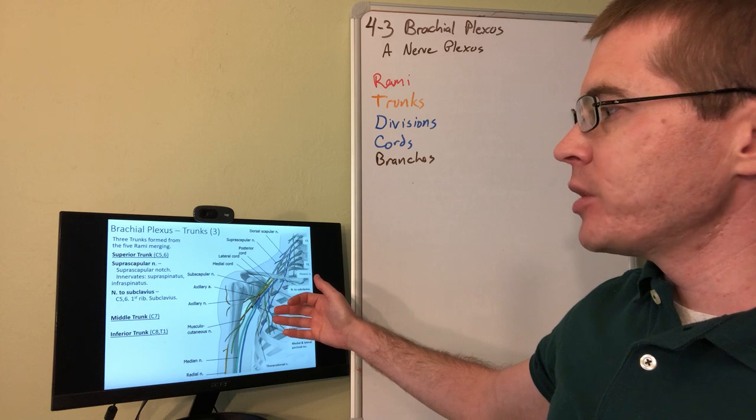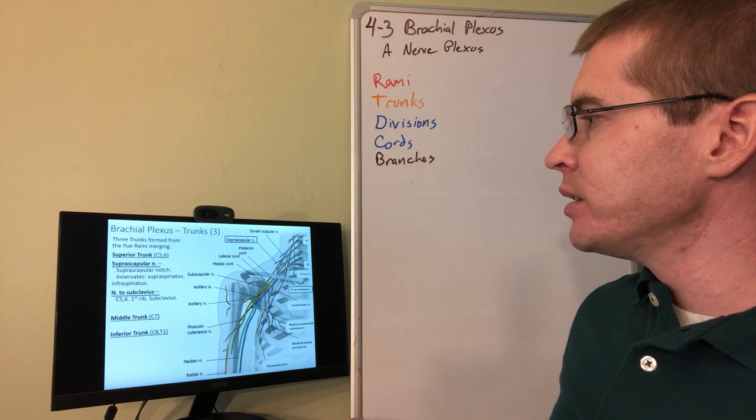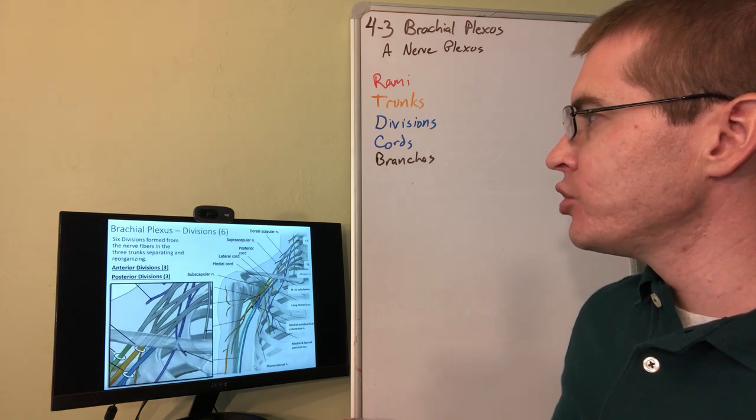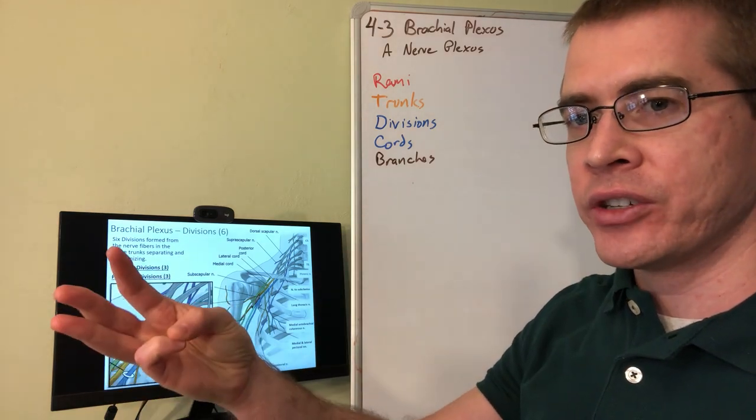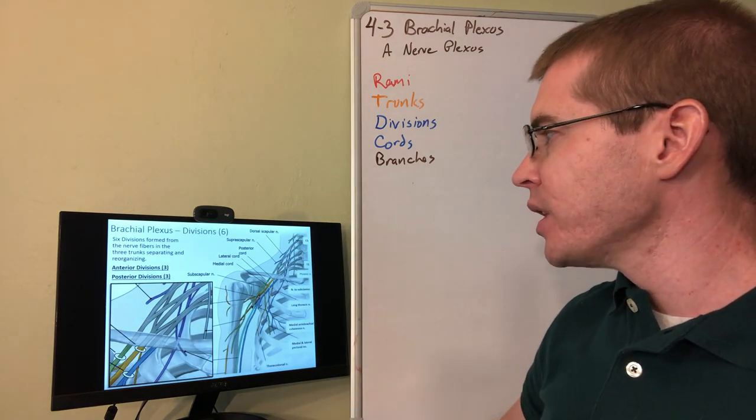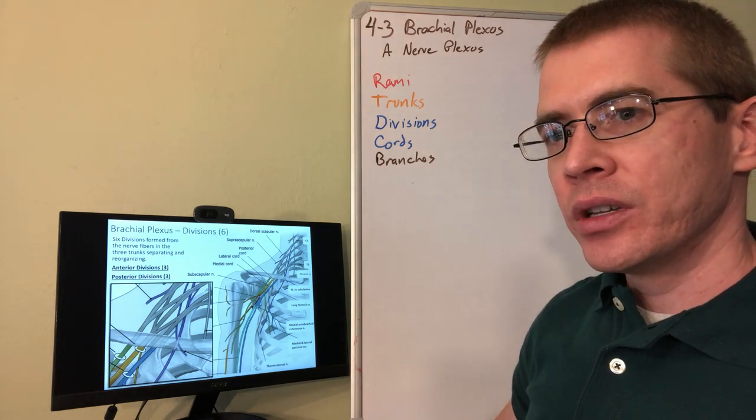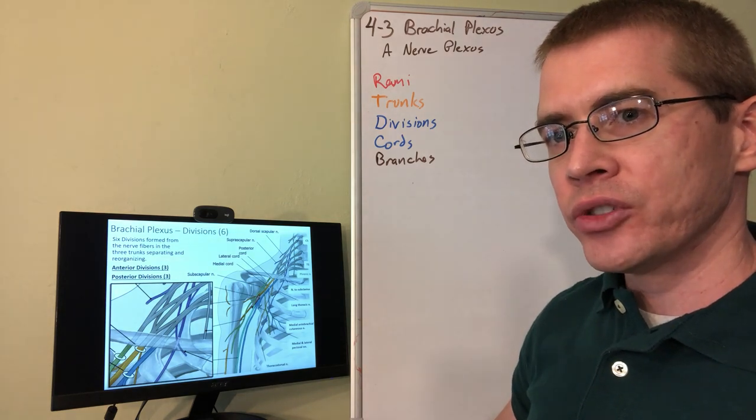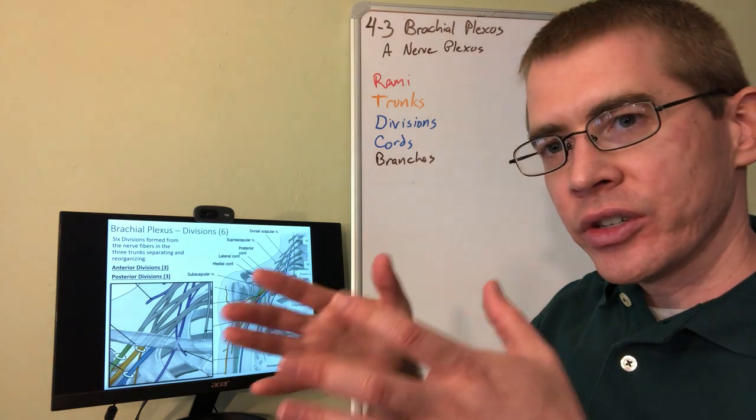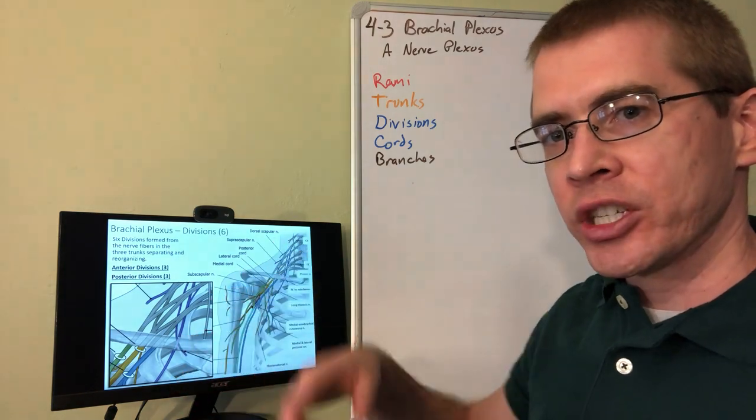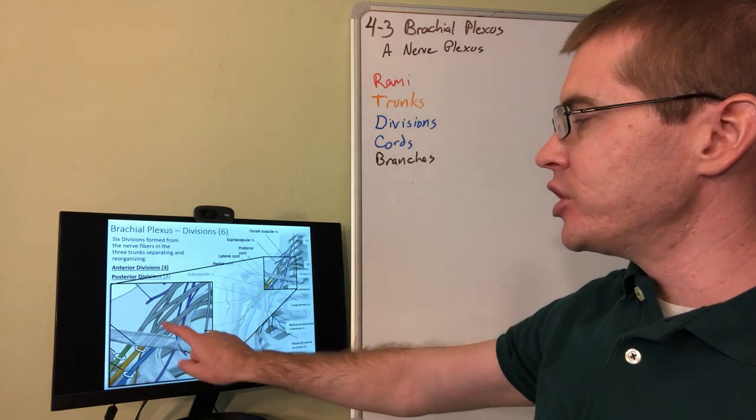Moving on to the branches coming off of the trunks. You can see those listed here highlighted and continuing to move on to the divisions. So there are three different divisions, three different anterior divisions and three different posterior divisions. The anterior divisions tend to innervate the flexor muscles, whereas the posterior divisions tend to innervate the extensor muscles. So they're starting to segregate themselves to the directionality they need to eventually go to. And so you can see this is a blown up image of the divisions here.